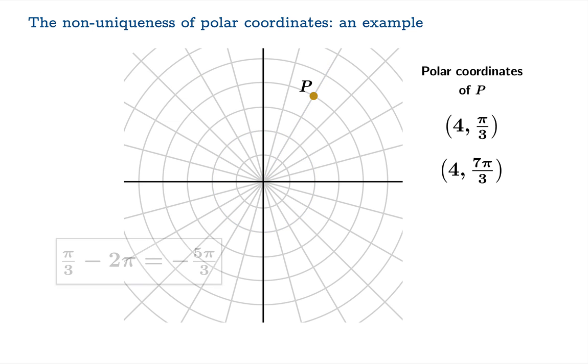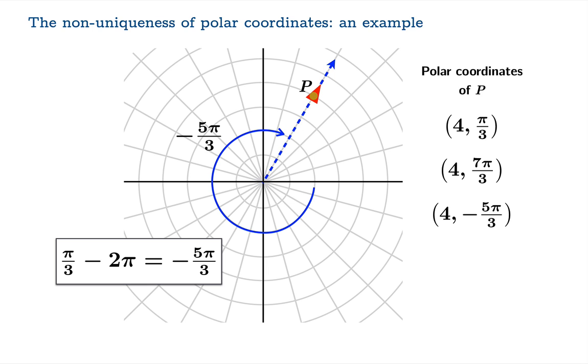But we could also subtract 2π from the direction coordinate, and obtain -5π/3. So in this case, we would travel 5π/3 units clockwise from the positive x-axis, and then moving 4 units out once again arrive at the same point.